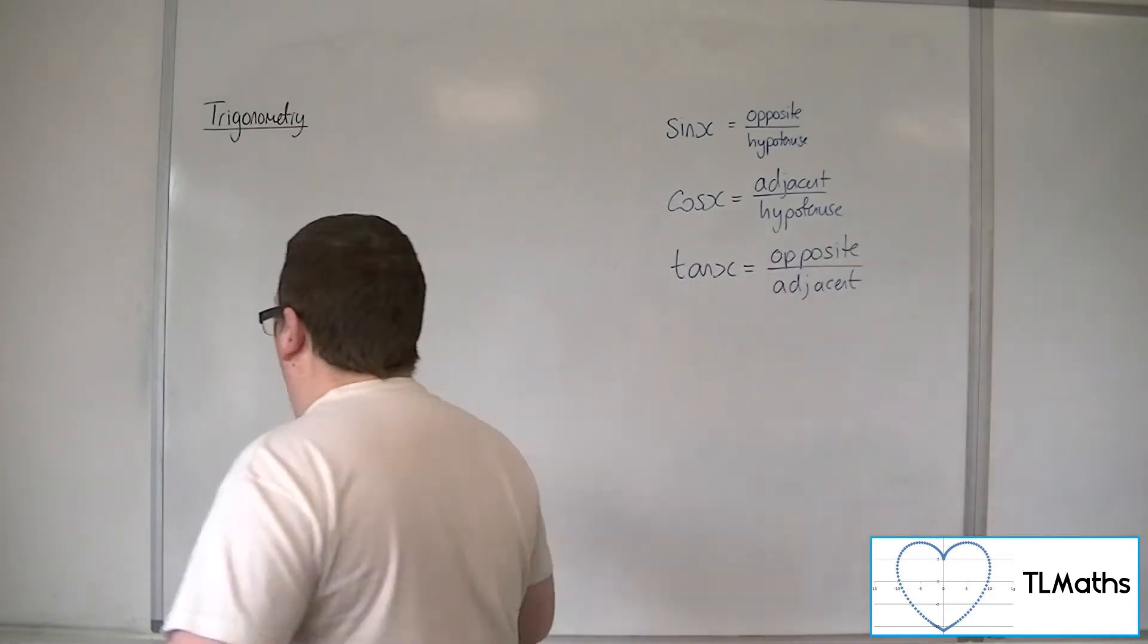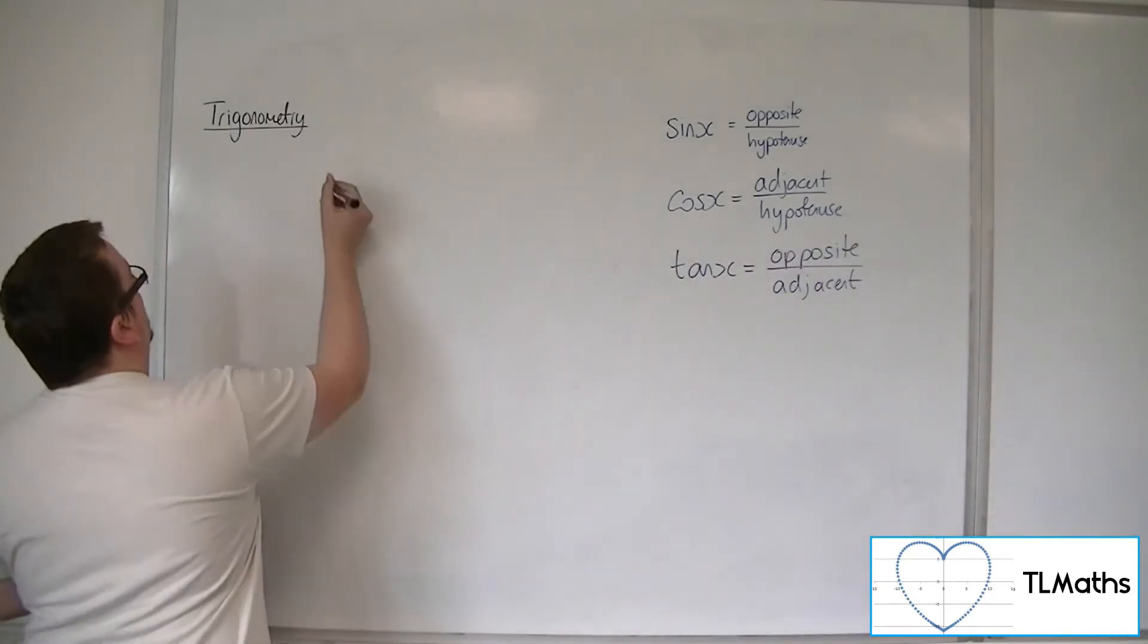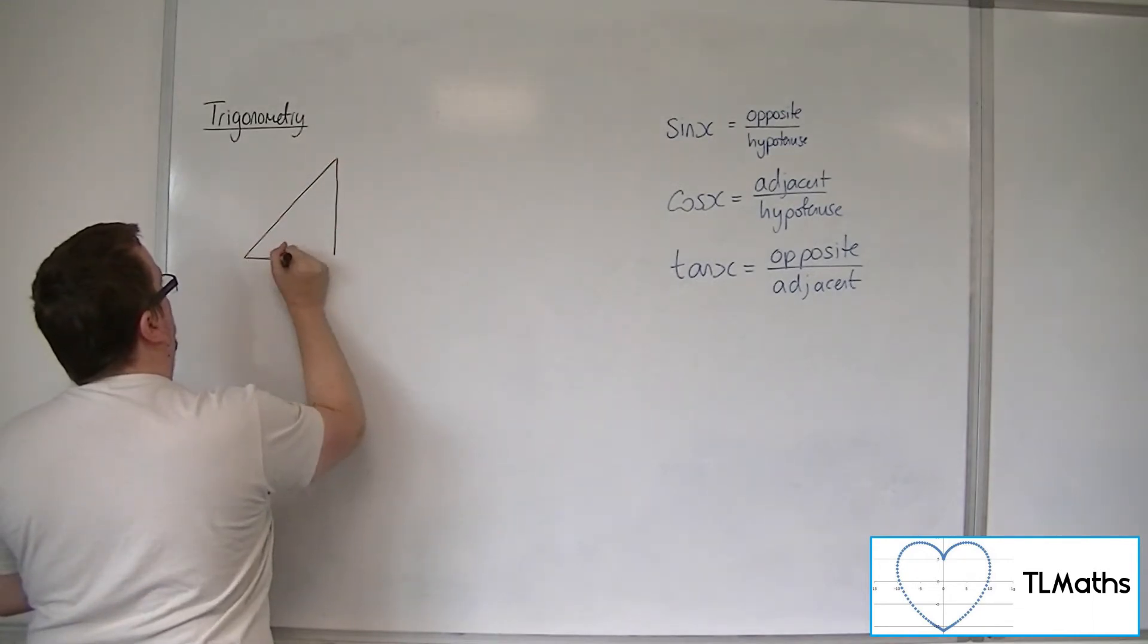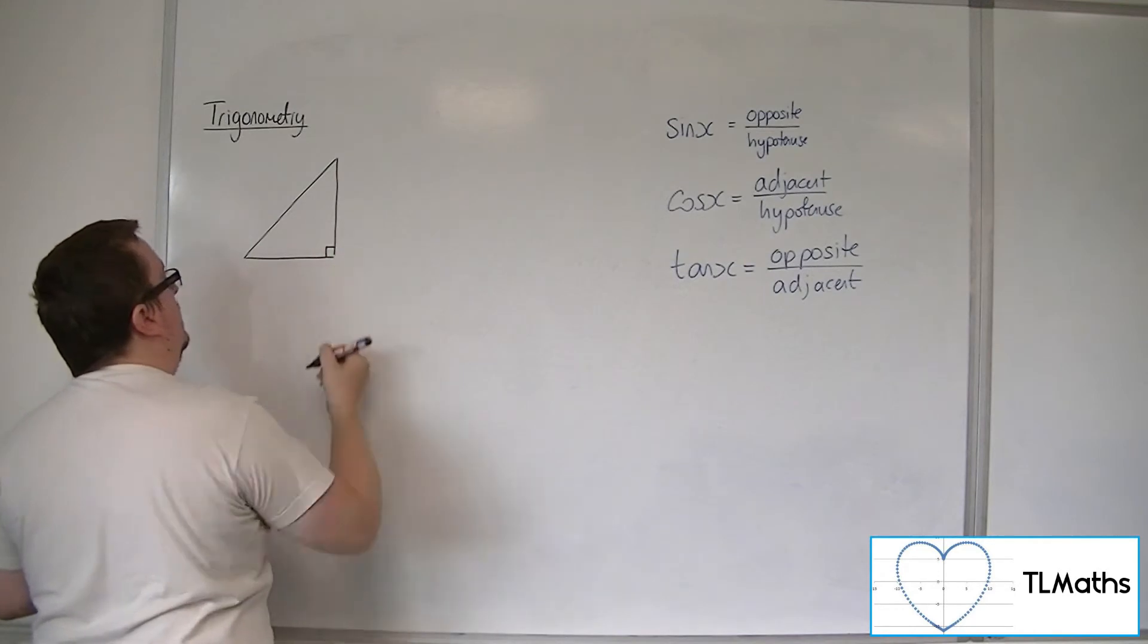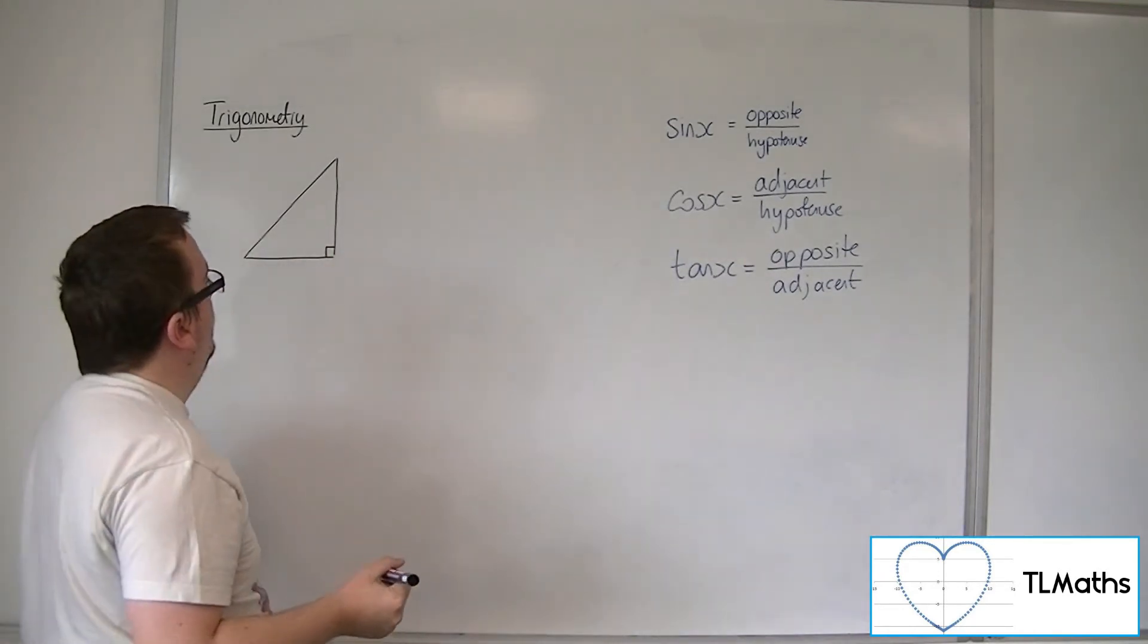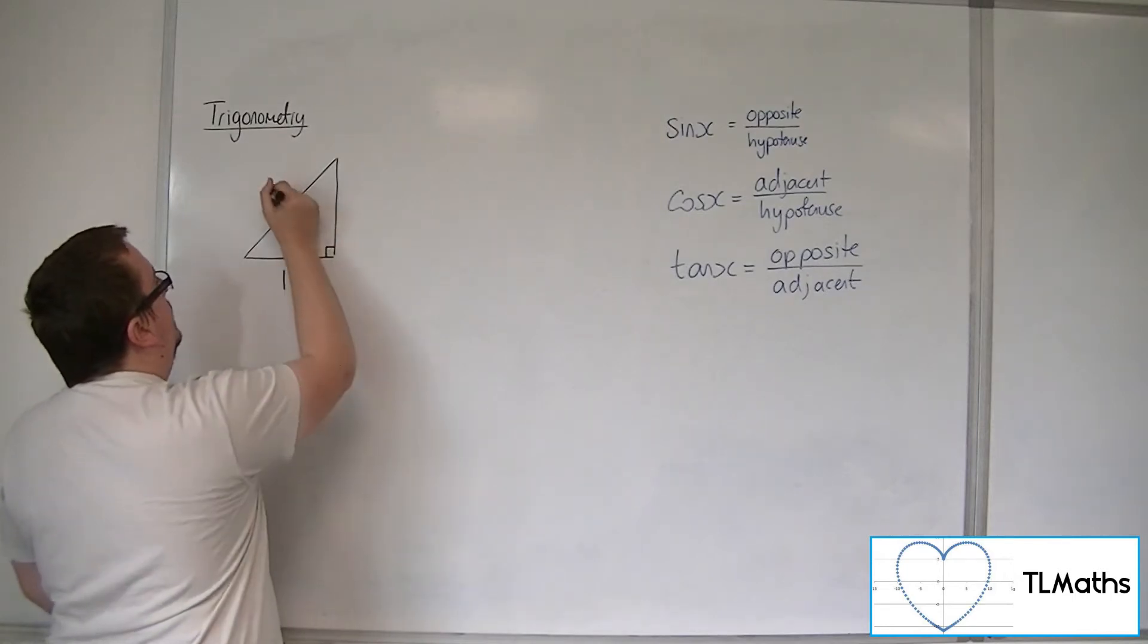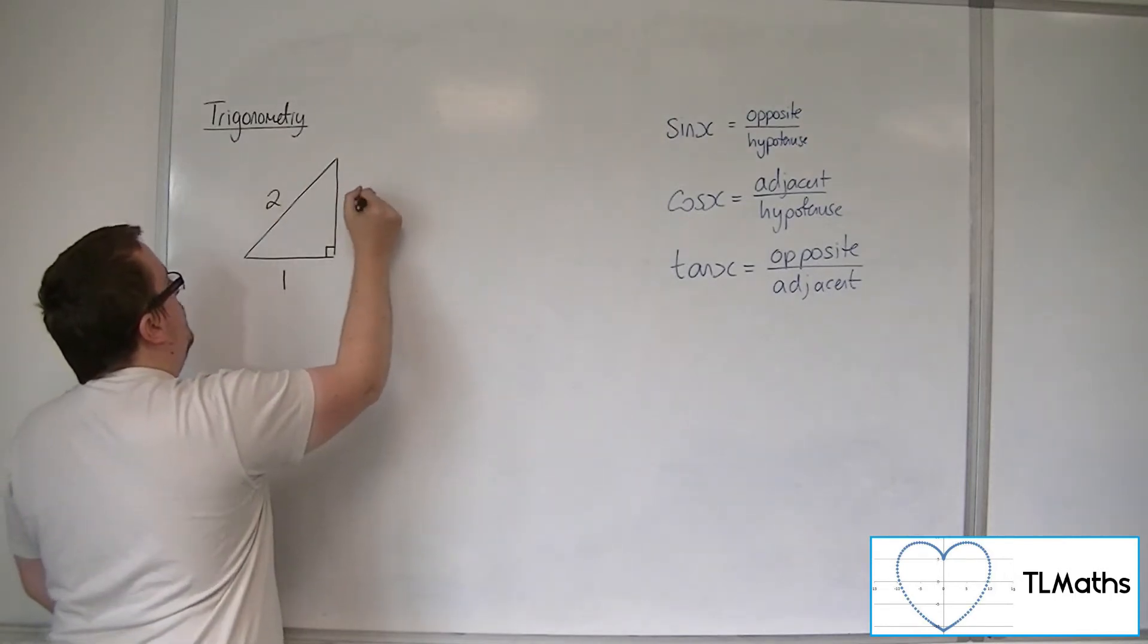So one of these triangles looks like this. They're both right angle triangles because we're dealing with SOHCAHTOA here. So here's the first one. It has sides of length 1, 2 and root 3.